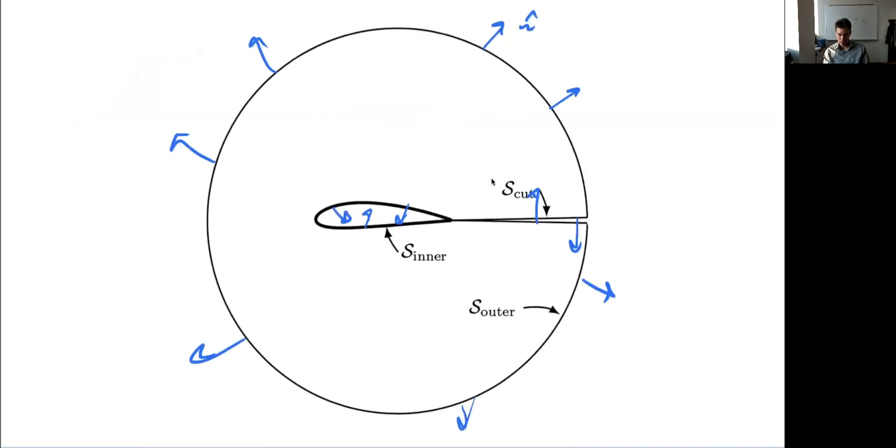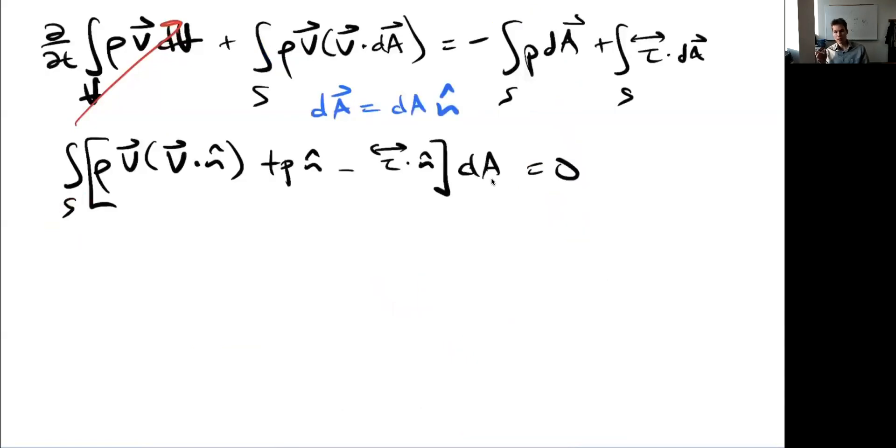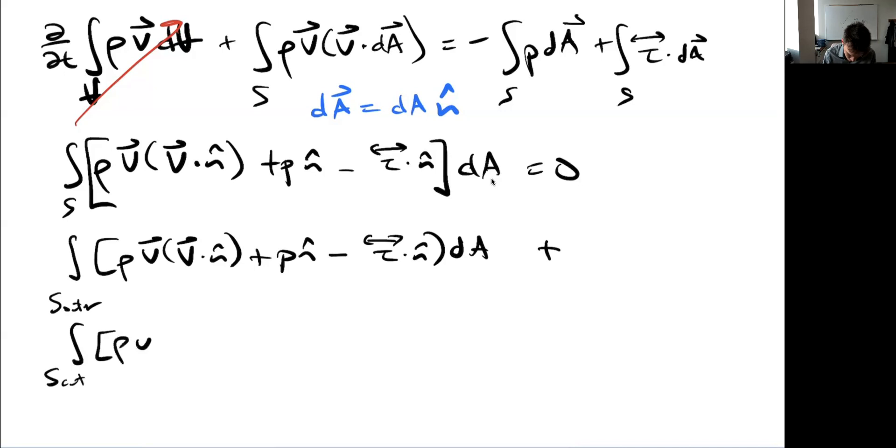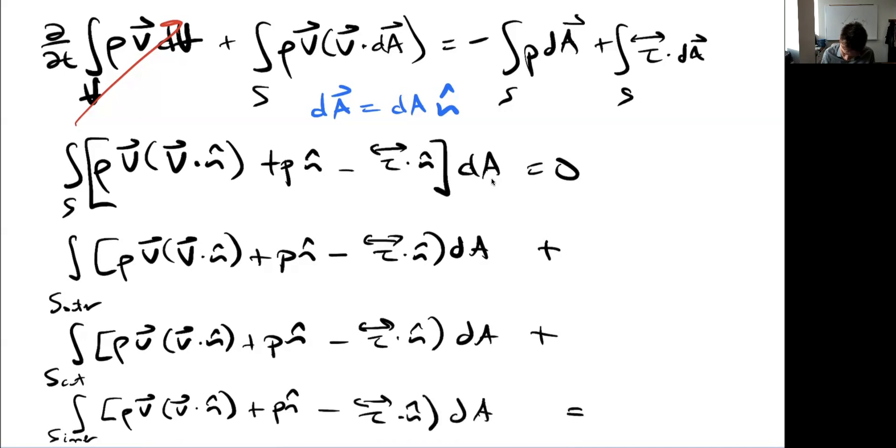And I have three surfaces: an outer, the inner, and the cut. So I can break up this integral into three pieces. One over the inner, one over the outer, and one over the cut surface. Let's go over the outer: ρV V dot n̂ plus Pn̂ minus τ dot n̂ dA plus integral over the inner, over the body. All of that equals zero.